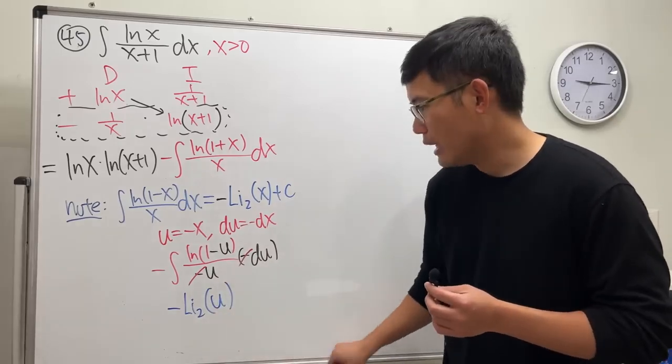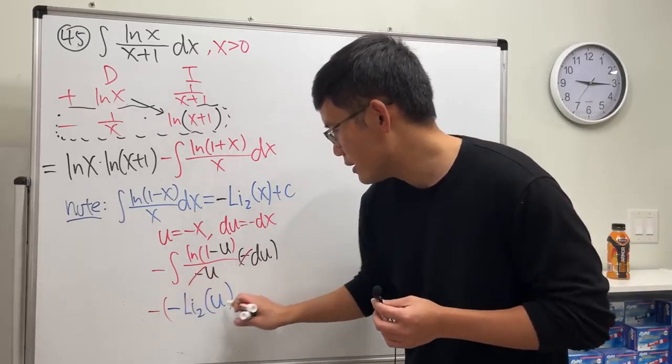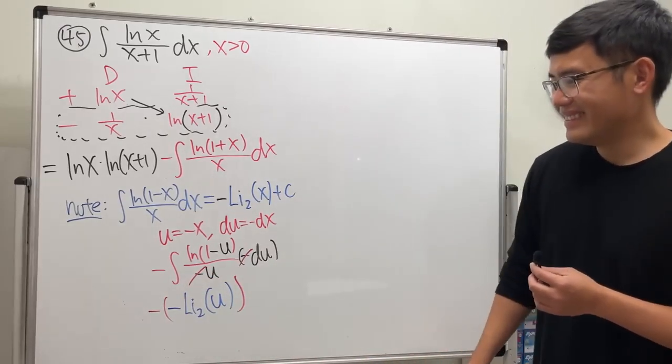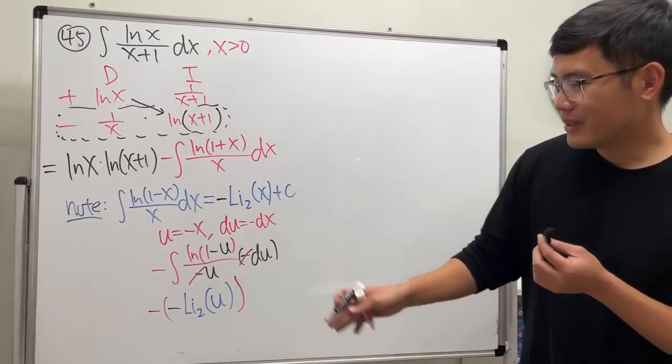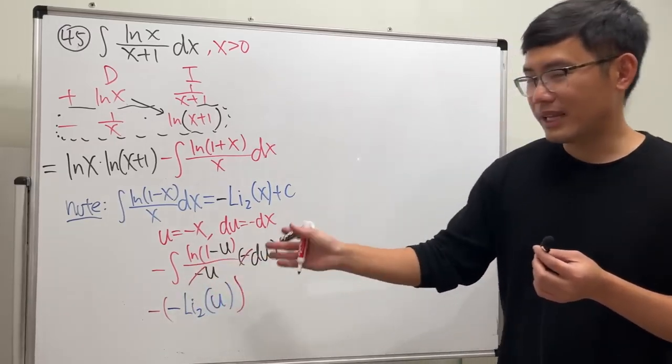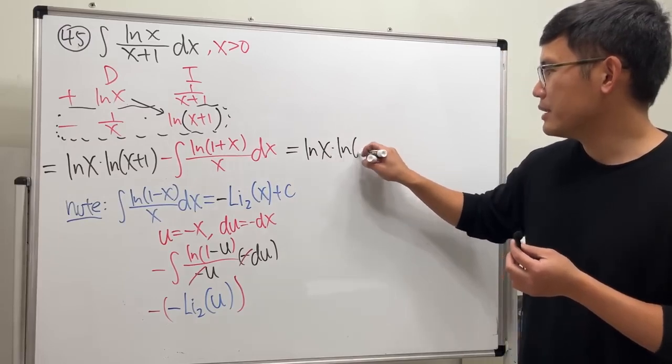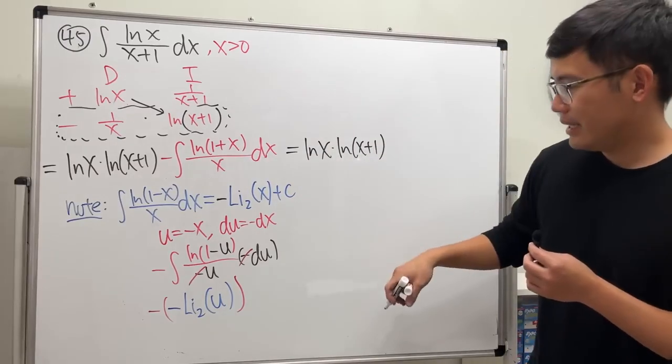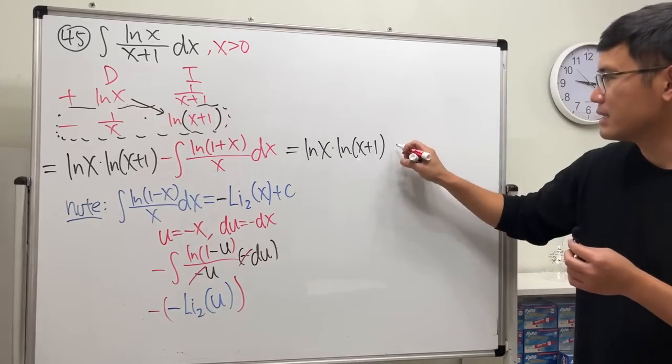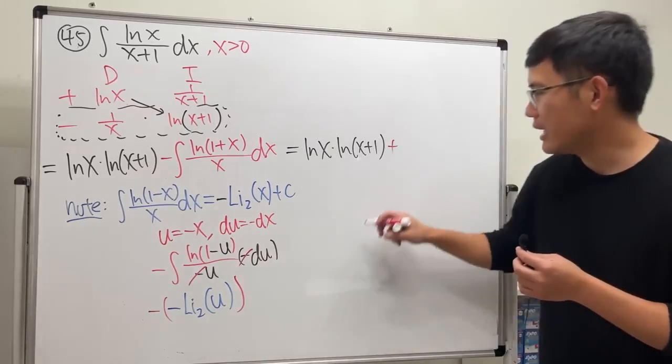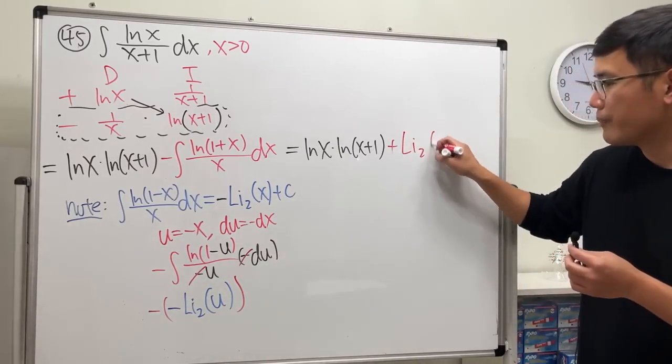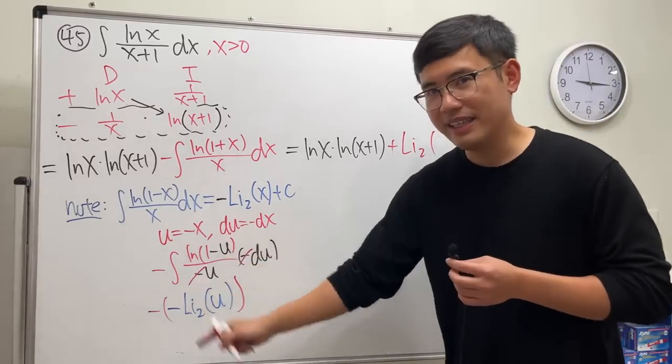But don't forget we still have this negative at the front. Okay, so negative times negative is positive. So that final answer is positive. So ln(x) times ln(x+1), and that will give us positive, and then we actually have li₂—but u is negative x.